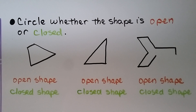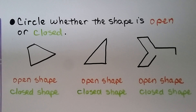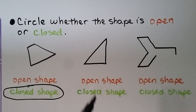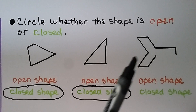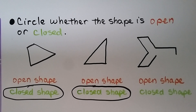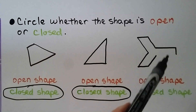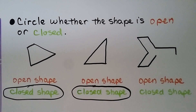Circle whether the shape is open or closed. Do you see any openings so that if you were inside of here, you could get out? No — they're all touching each other, so that's a closed shape. What about this one? I don't see any openings, so it must be a closed shape. What about this one? It starts here and goes around, but then it ends over here — it doesn't start and end at the same point, and there's a big open space. So that must be an open shape.